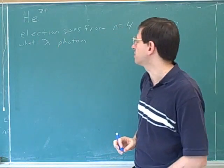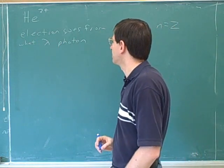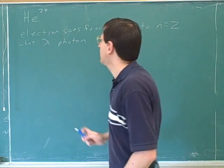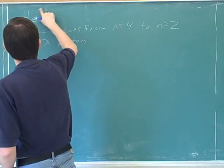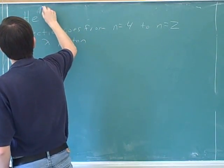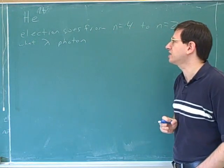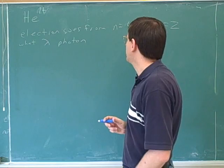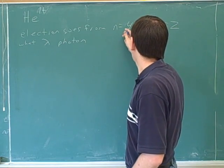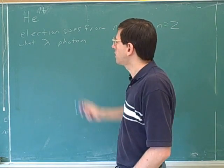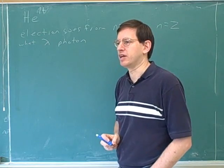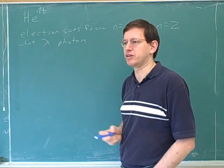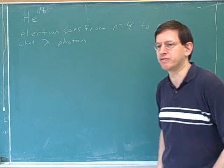Alright, well first of all, let's make sure we understand the basic ideas. Here's the type of problem you're likely to see on the exam. Let's say we have a positively charged helium ion, and an electron goes from the n=4 energy level to n=2. The question is how to find the wavelength of the photon. So let's sketch out how we would do this to make sure we understand the basic idea.